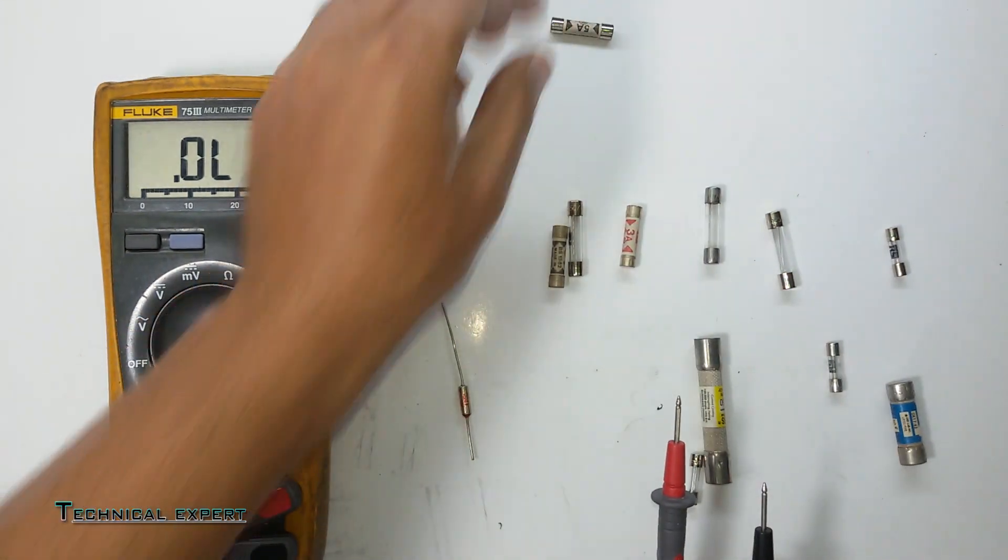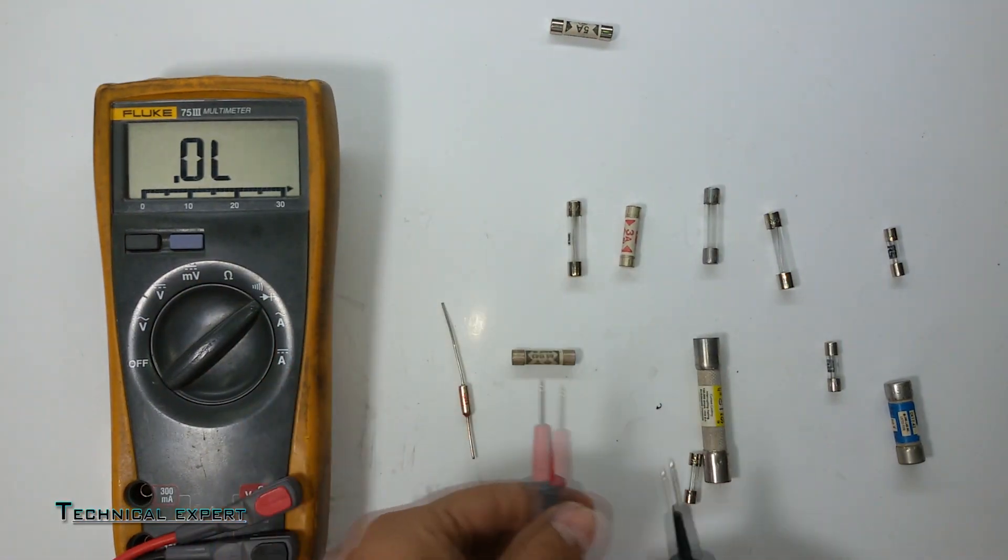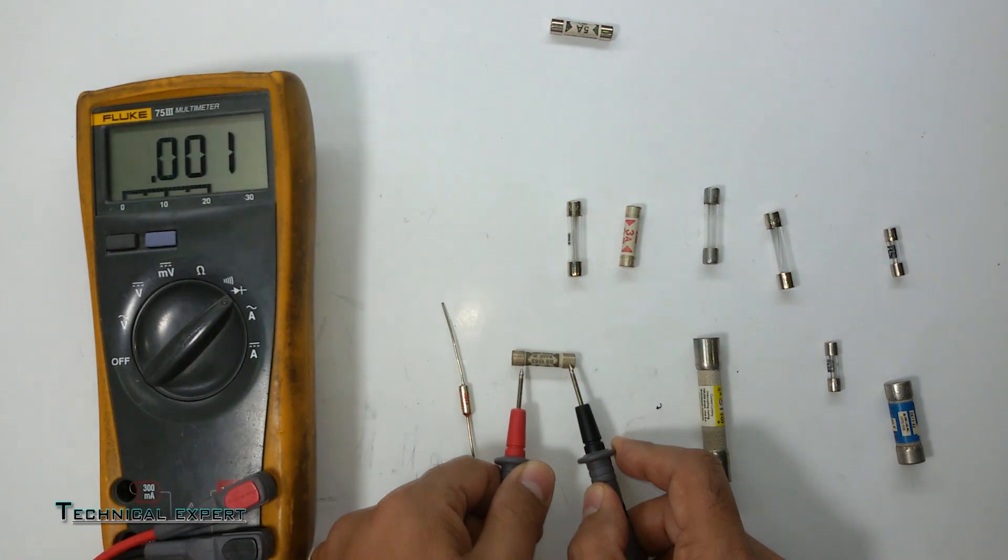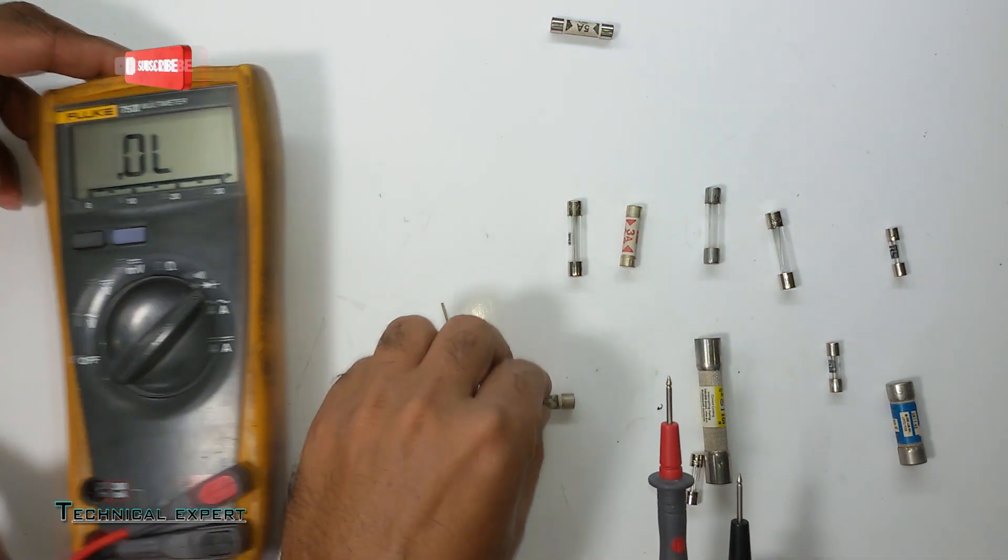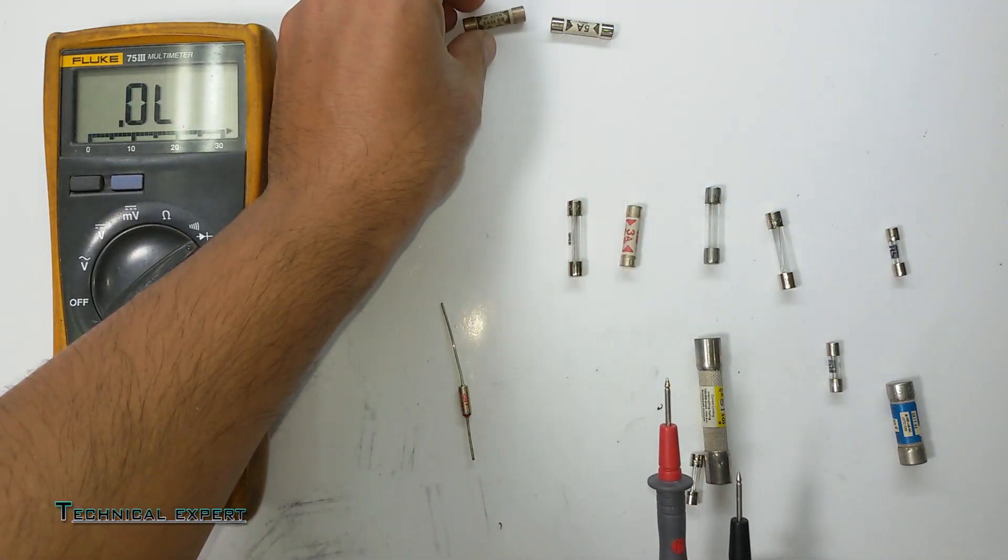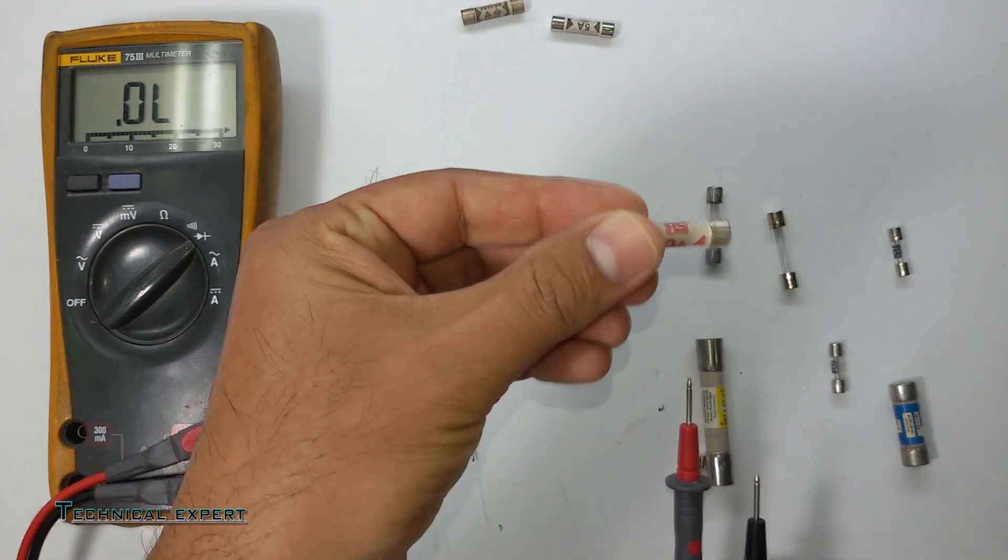We have to check this one now. This one also conducting, so it means this fuse is also okay. So now we have to check 3 ampere fuse.